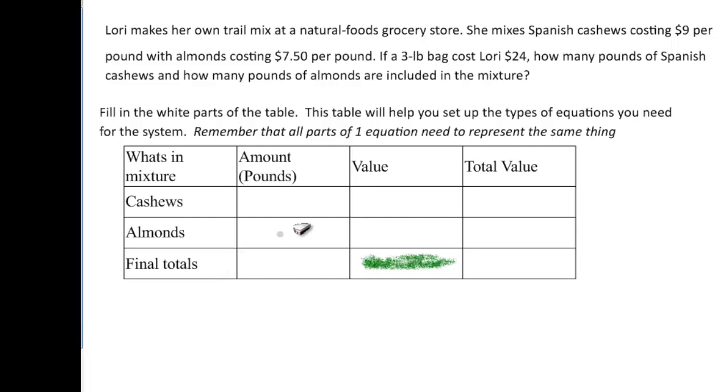We want to fill in the table here, the white part, not the green one. This table will help us set up our equations. So we need to know the amount. We have our items here, the cashews and the almonds. I already set that one up for us. So we want to know how many pounds of cashews.